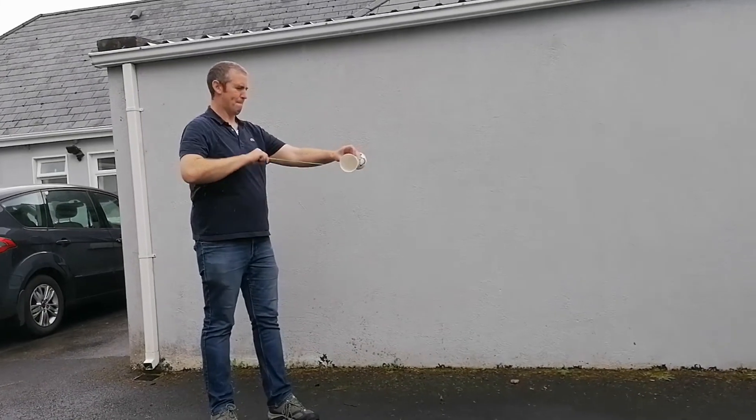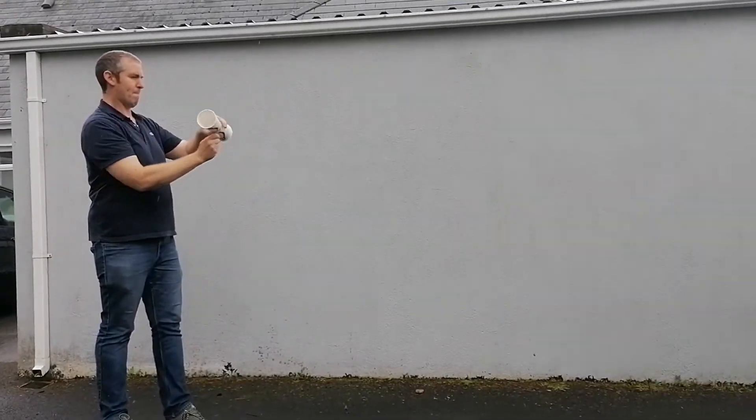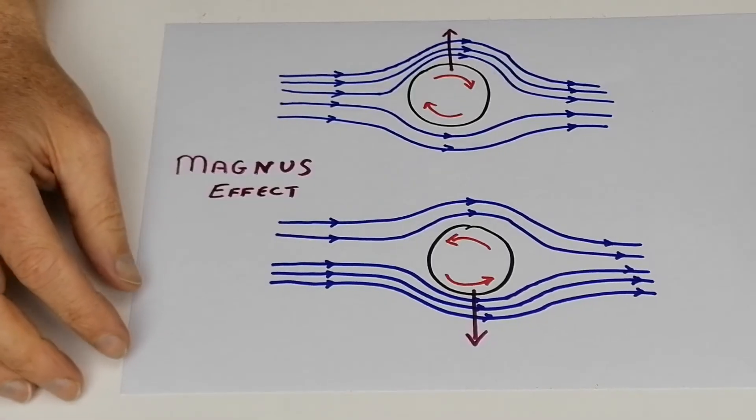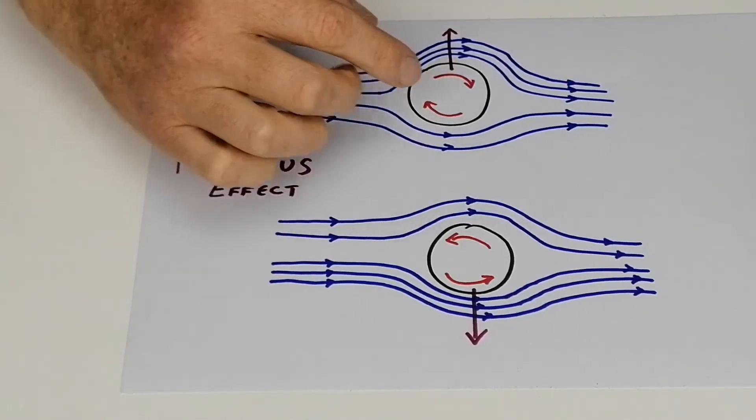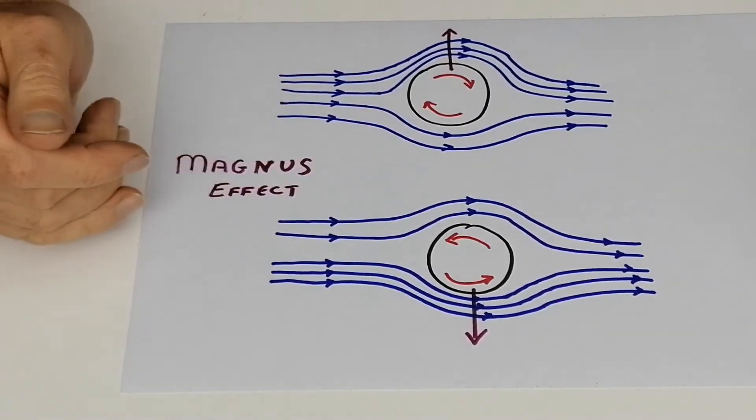If you do it in the opposite direction—so now I'm going clockwise—when you let it go it will spin in the opposite direction and this won't give you any lift. I want to explain the science behind the coffee cups and why is it when they spin in different directions, when they spin in one direction it lifts up, and when you spin in the opposite direction it goes down.